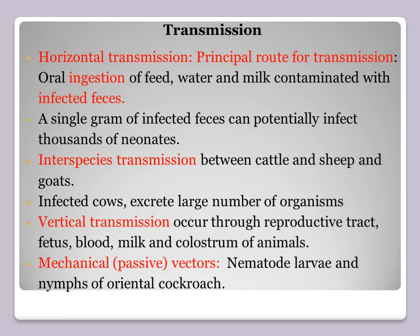Transmission occurs by horizontal transmission — from one animal to another. This is the principal route of transmission: oral ingestion of feed, water, and milk contaminated with infected feces. This is the only way the organism is excreted from the infected animal. A single gram of infected feces can potentially infect thousands of young ones, who are very susceptible.